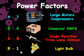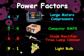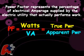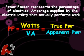A power factor of 1 means that 100% of the amps flowing in the electrical wires produce watts that power this light bulb. Power factor represents the percentage of electrical amperage supplied by the electric utility that actually performs work.